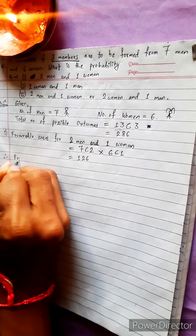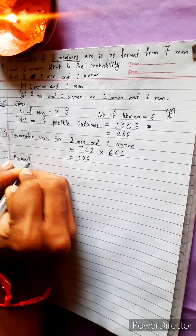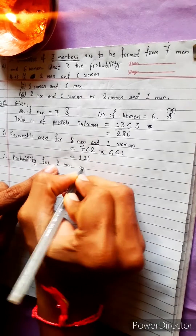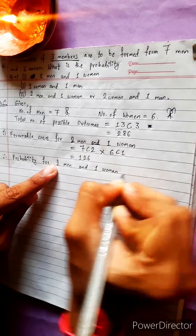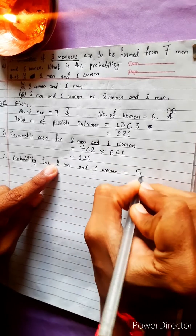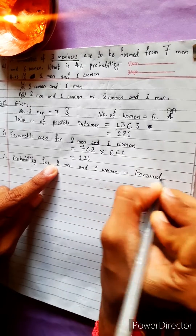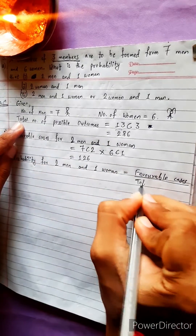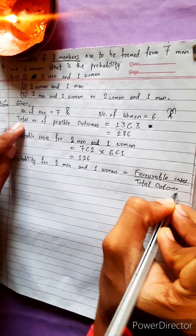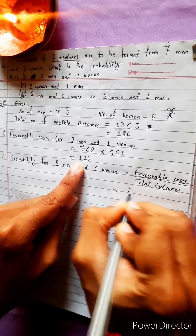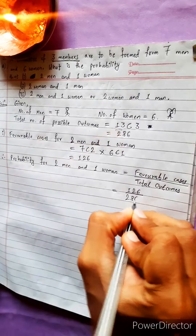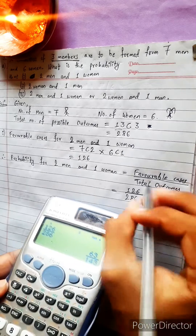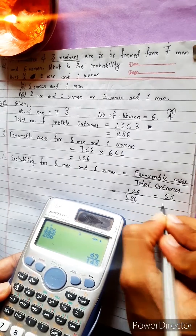Therefore, the probability for two men and one woman equals favorable cases divided by total possible outcomes. That is 126 divided by 286, which simplifies to 63 over 143.